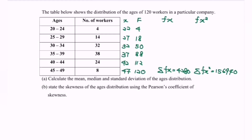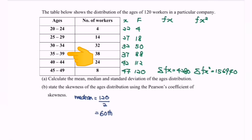Next is to find the median. With n = 120, we look for the 60th term (120 / 2 = 60). Looking at the cumulative frequencies, the 60th term falls in the class 35 to 39. So that will be the median class.